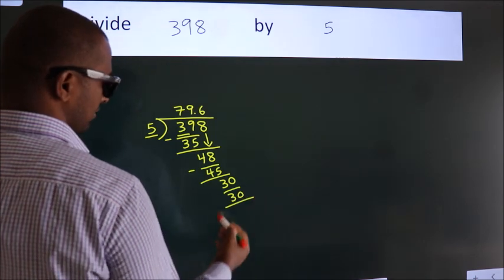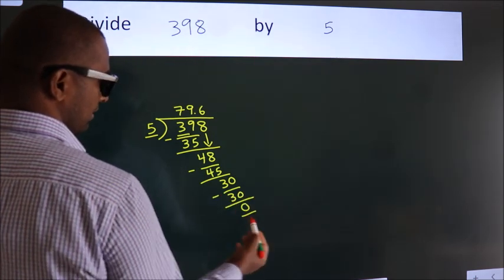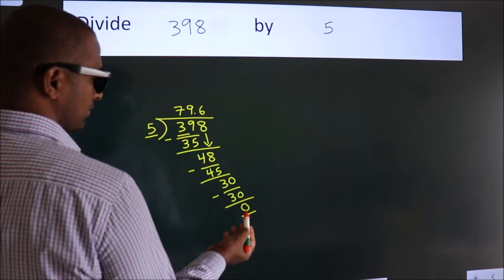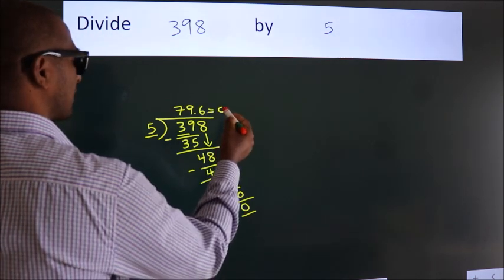Now we subtract and we get 0. We got remainder 0, so this is our quotient.